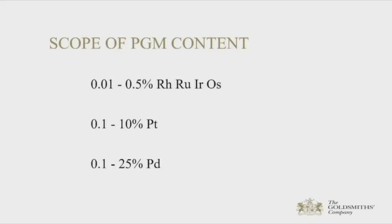Anything above around about 0.1% rhodium, ruthenium, or iridium is problematic for the fire assay process, whereas higher levels of platinum — approximately 10% — and up to 25% palladium content can be corrected for. The presence of more than one of these elements presents complications, but generally we only see one element as the main inclusion in any significant amount.